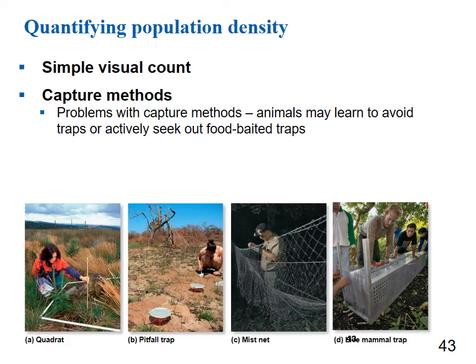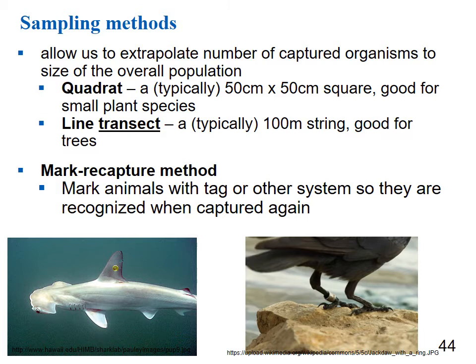These sampling methods allow us to extrapolate the number of captured organisms to the overall population size. Quadrants of half-meter by half-meter or meter by meter squares work well for small plant species but not large trees like mature oaks. For larger plants, a line transect method works better — typically a 100-meter line with sampling across it, or quadrants placed at 0, 25, 50, 75, and 100 meters.